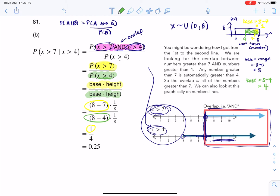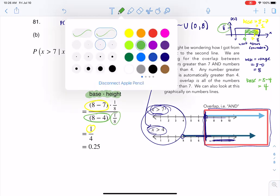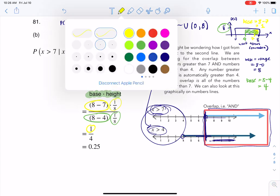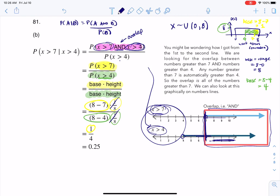Now the height, the height's always uniform. It's always 1/8. So it's 1/8 for that bottom probability, and it's also 1/8 for that top probability. But those two will always cancel out. And ultimately, I get 1 over 4 or 0.25.